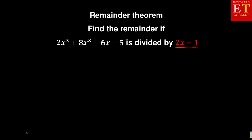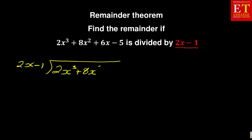We are saying 2x minus 1 is dividing 2x cubed plus 8x squared plus 6x minus 5. So that's what we are having. When we are doing the long division, what you are simply doing is you are saying 2x into 2x cubed — that is 2x cubed divided by 2x. When you cancel, you are going to be left with x squared. So in this case, you are going to have x squared on top.